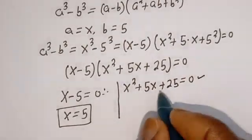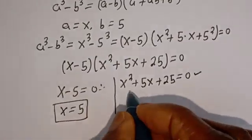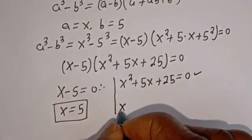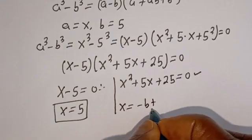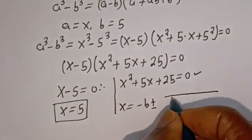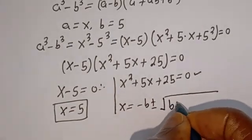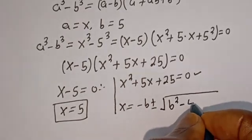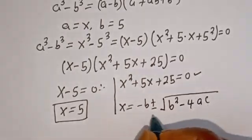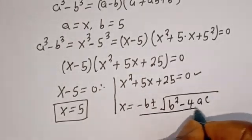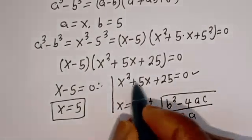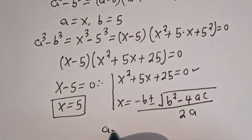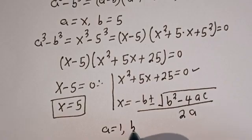Let's solve this using the quadratic formula. From the quadratic formula, s is equal to minus b plus or minus square root of b squared minus 4ac, divided by 2a.